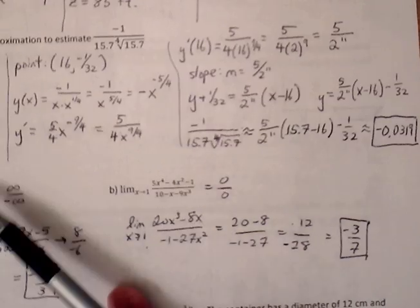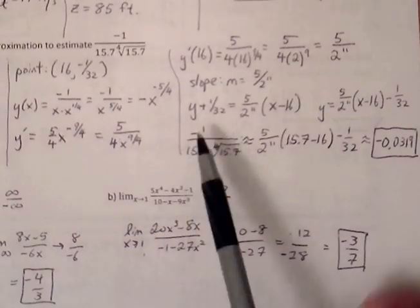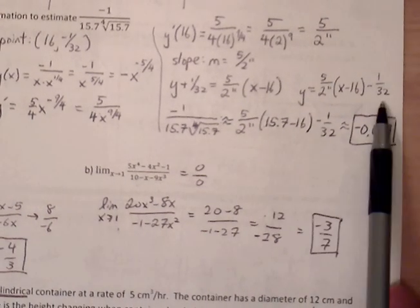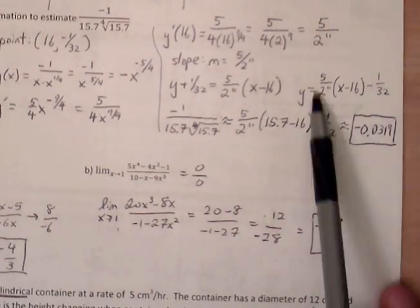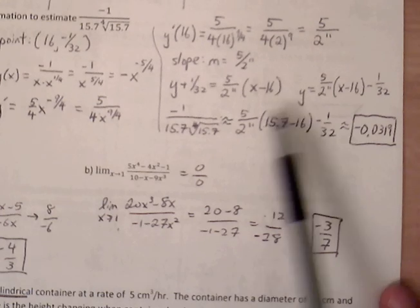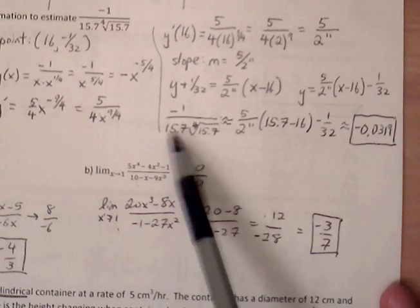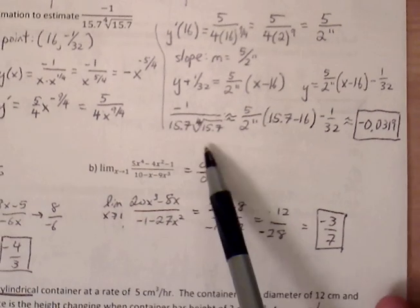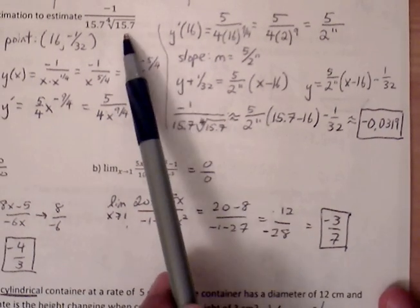We have our slope, we have our ordered pair, plug into point-slope equation, but then we solve for y and once we solve for y then all we do is we replace the x value with just the decimal and use that to approximate what this value would be.